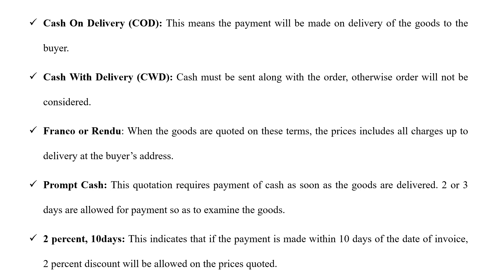The last type is 2% 10 days. This means that if the payment is made within 10 days from the date of delivery or the date of invoice — whatever is written in the bill — you will get a discount of 2%. That is why it is called 2% 10 days: within 10 days you make the payment, and you get a 2% discount.